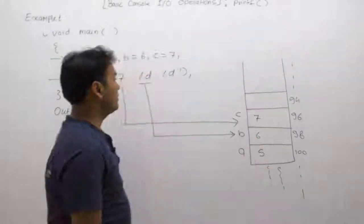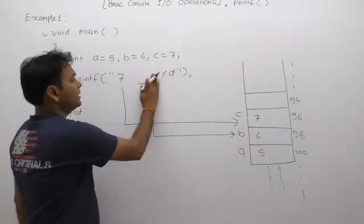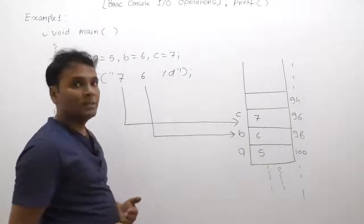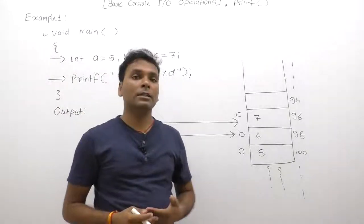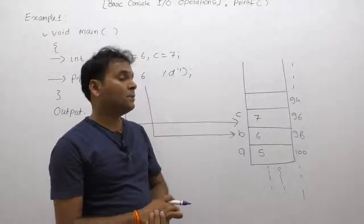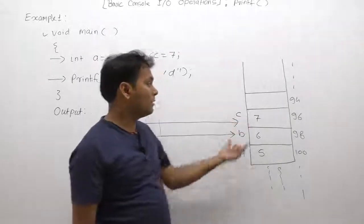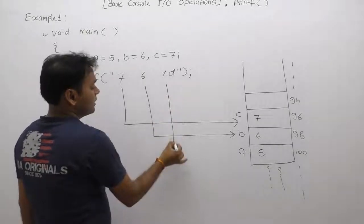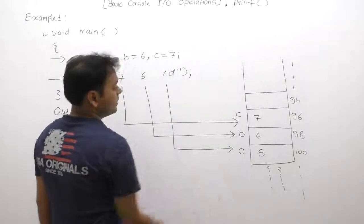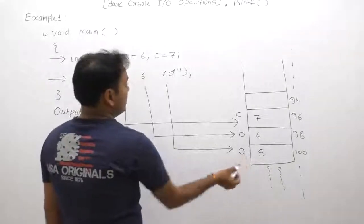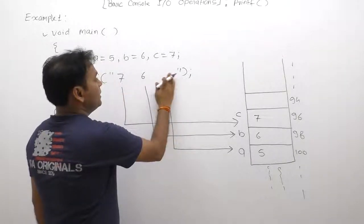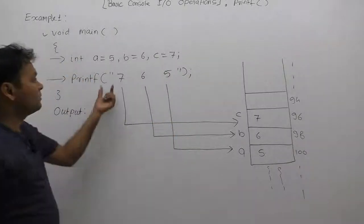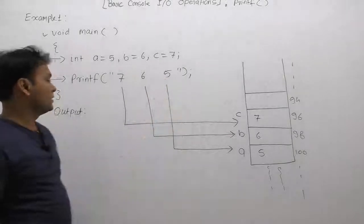Therefore next top element is 6, so we are replacing here with 6. Next, what is the value of next top element? Next top element is a having value as five. Therefore next percent d is replaced by five. Now final message becomes seven space six space five. Therefore this is the final output: 7 space 6 space 5.